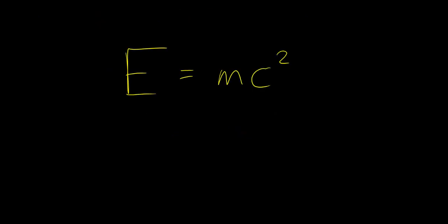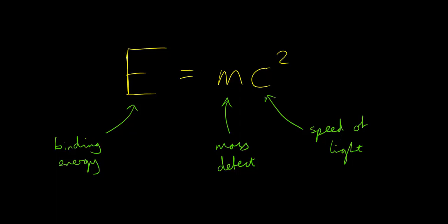Binding energy can be calculated using the most famous equation of all, E equals MC squared, where E is the binding energy, M is the mass defect, and C is the speed of light in a vacuum. You may also be asked to determine the binding energy per nucleon. This is simply the binding energy divided by the number of nucleons that you have.